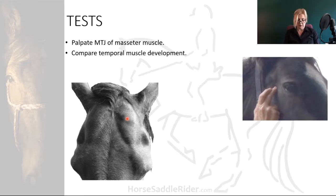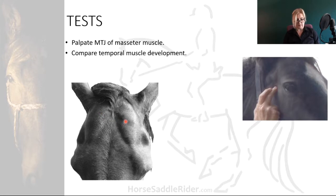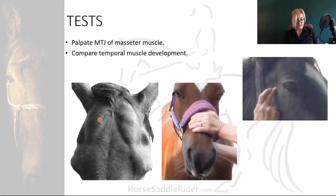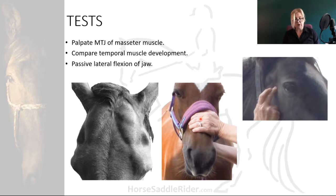Incidentally, bilateral enlargement of these muscles can indicate some form of sustained stress or pain. Compare the temporal muscle development. The third method: when the TMJ is physically restricted, this can be observed passively as reduced lateral flexion of the mandible as it glides across the maxilla via contact with the occlusal surface.